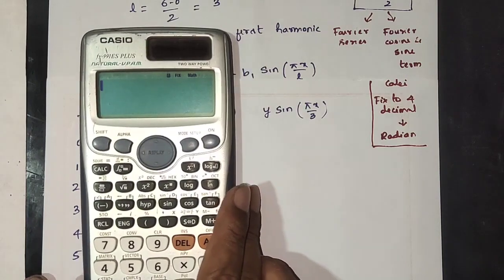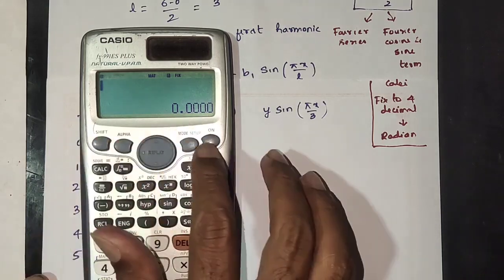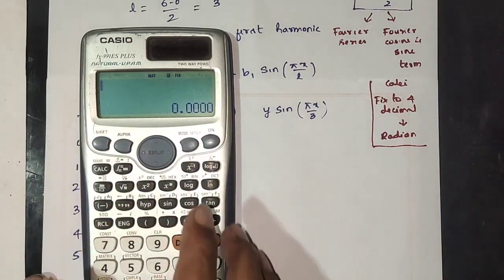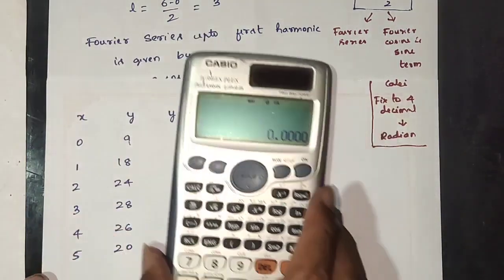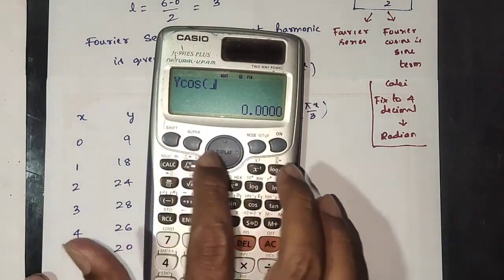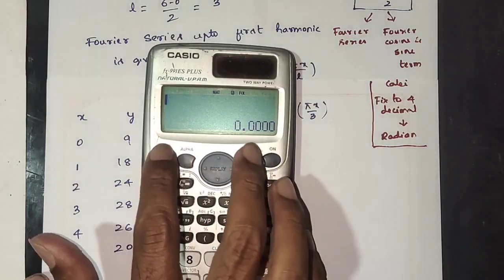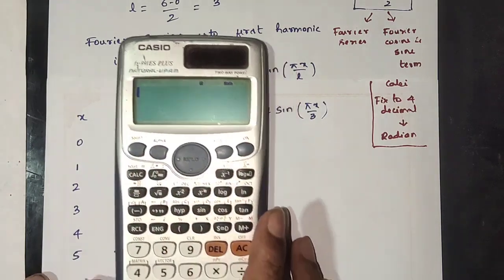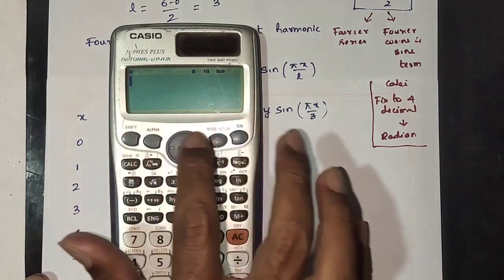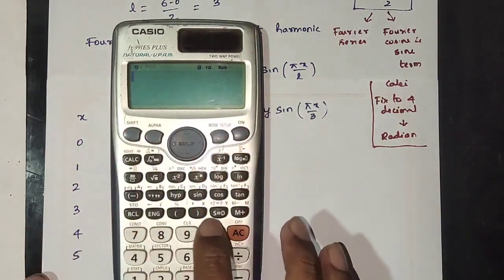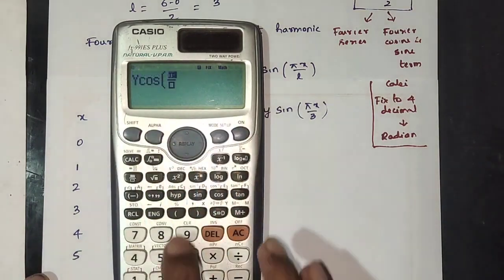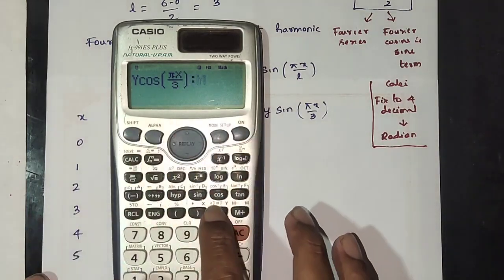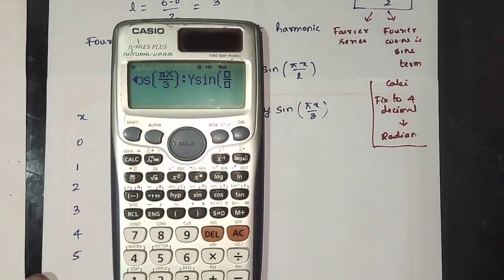On the calculator: Shift 3, 6, 4 — set to radian mode. Enter y·cos and y·sin calculations. Use alpha integral, alpha y·sin. Shift 2, 9, 3 for shift mode operations. Clear, then compute y·cos(πx/3) for each data point.